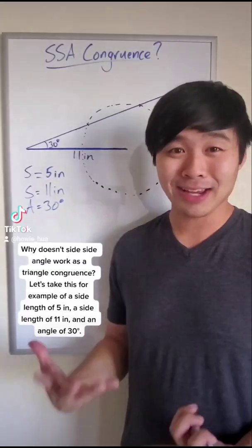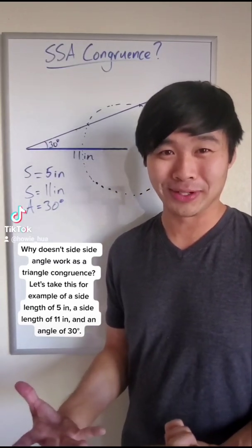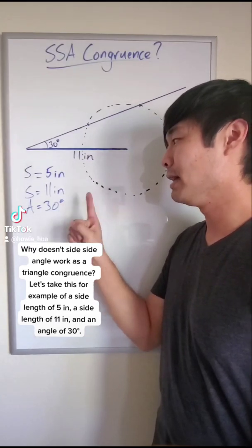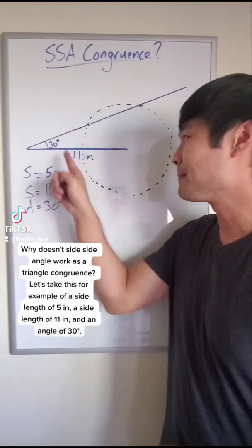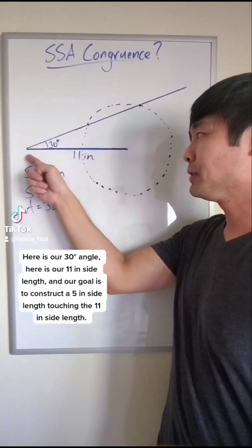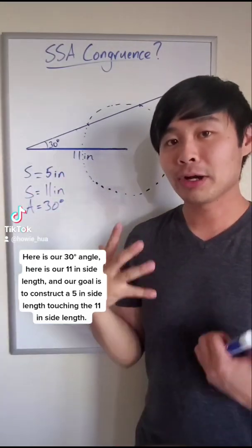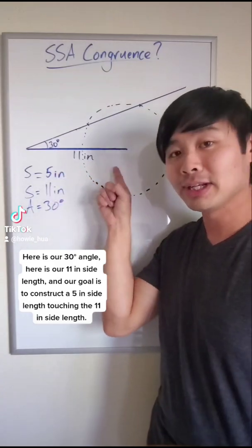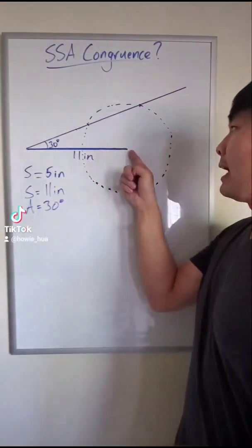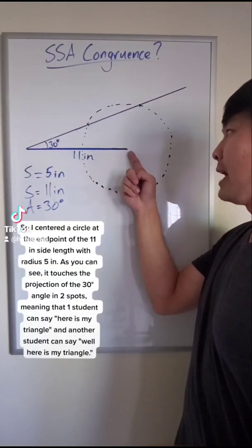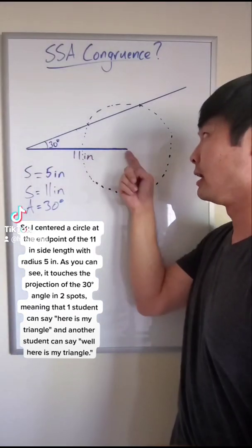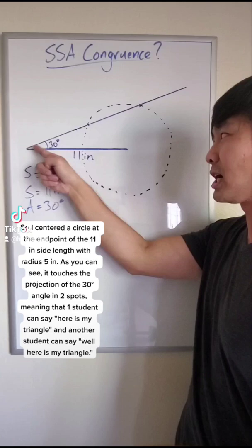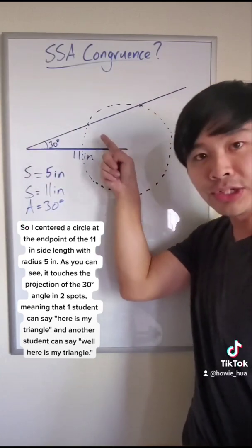Why doesn't side side angle work as a triangle congruence? Let's take this for example of a side length of five inches, a side length of 11 inches and an angle of 30 degrees. Here is our 30 degree angle. Here's our 11 inch side length. And our goal is to construct a five inch side length touching the 11 inch side length. So I centered a circle at the endpoint of the 11 inch side length with radius five inches.